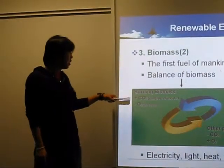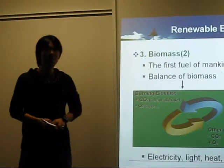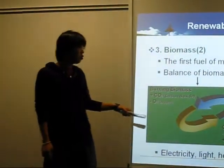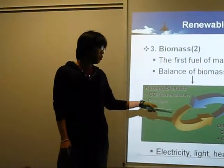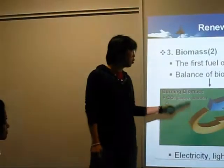When burning biomass, carbon dioxide is released. And also, it uses other plants to make food. So it's called balance of biomass.